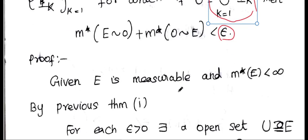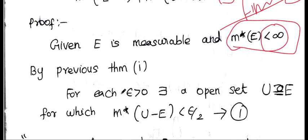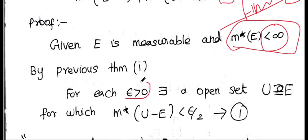This is one of the proofs. Given E is measurable — that is our goal — and M*(E), the measure of E, is less than infinity, meaning it is finite. By the previous theorem, for each epsilon greater than 0, there exists an open set U containing E for which M*(U \ E) is less than epsilon by 2. This is equation number 1.